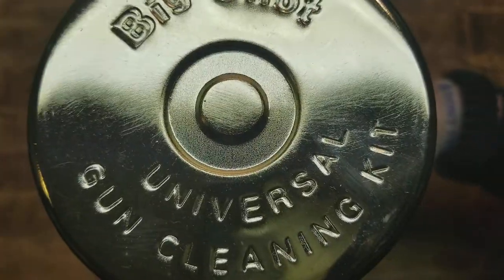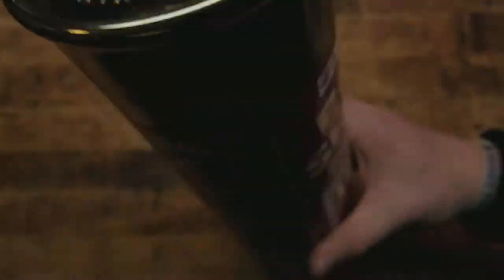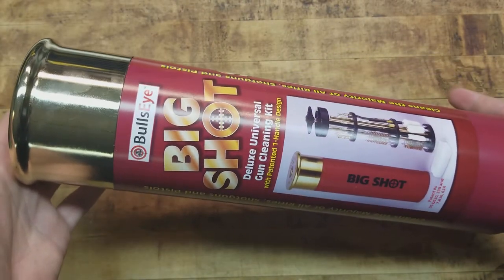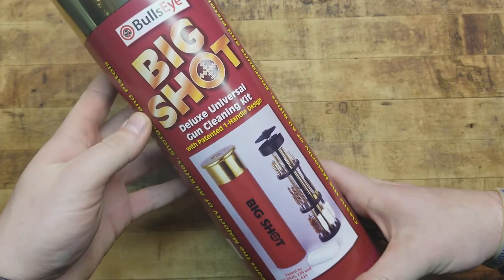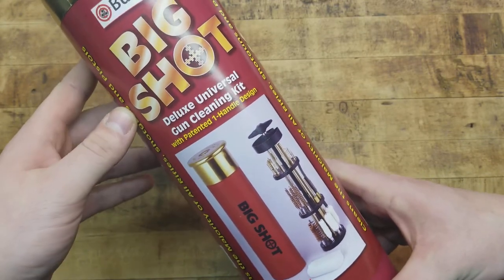Back at the tabletop again going over something that's really cool and super useful and that's exactly what you guys need. We are looking at the Big Shot Universal Gun Cleaning Kit that comes in this awesome super huge 12 gauge package. I like it a lot. I'll give you a look at it there. Big Shot Deluxe Universe. This is the Deluxe.